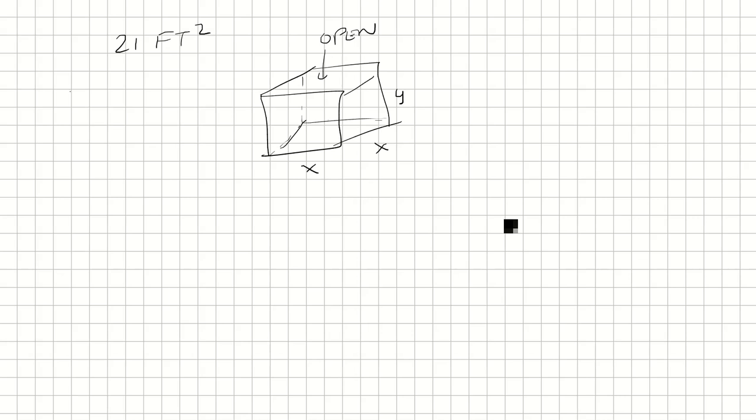Which is the bottom, area of the bottom, plus area of the front and back, which is 2xy, and then the two sides. So basically it's going to be 4xy, because each of the four sides has area xy, there's four of them, and the top is open, so we're going to ignore that.